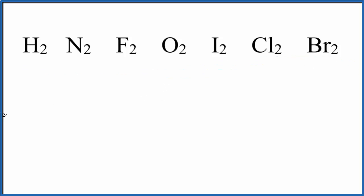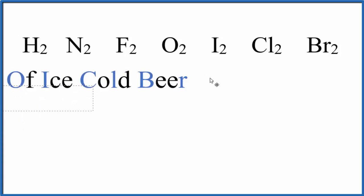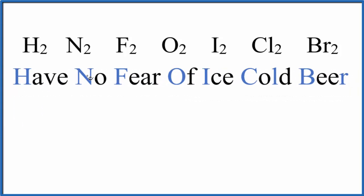There are seven, and the way to remember the seven is this mnemonic here. Maybe not the most K-12 appropriate mnemonic, but it works really well because we have hydrogen, nitrogen, fluorine, oxygen, iodine, chlorine (Cl), and then bromine (Br). So these are the seven that you'll see quite frequently in chemistry.